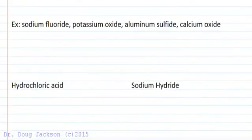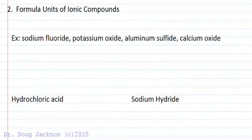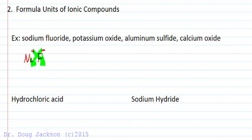Now that we know how to form ions, let's form the formula units of ionic compounds, starting with sodium fluoride. Sodium is in group one, so it's a plus one ion; fluoride is in group seven, so it's a minus one. We use the method of crisscrossing the charges to determine how many of each we need to balance the charge — for sodium fluoride, one to one is all we need.